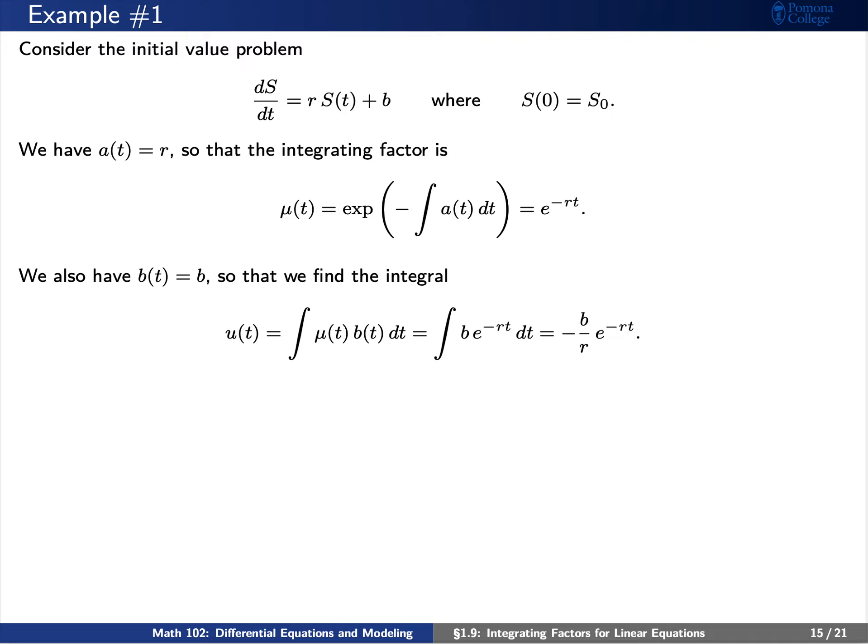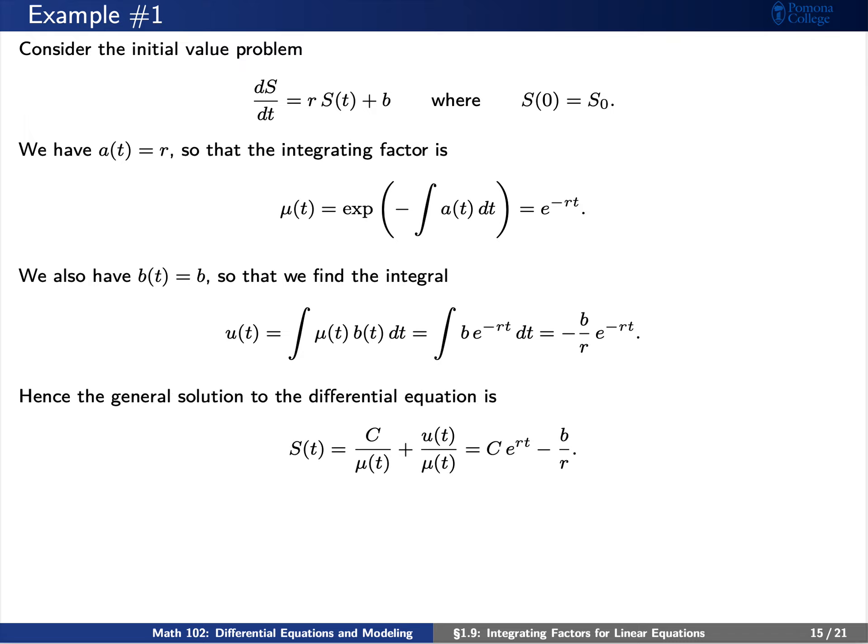Next, we see that b of t is the constant b. So the integral u of t is just the integral of b times e to the negative rt dt. Since b is a constant, this equals negative b over r times e to the negative rt. Finally, we can compute the general solution s of t as a constant divided by mu of t plus u of t divided by mu of t. This equals a constant times e to the positive rt minus b over r.